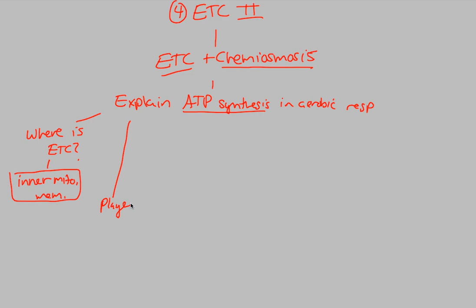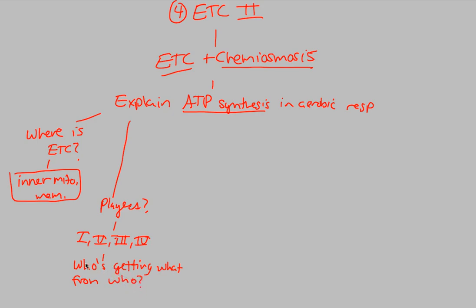Who are the major players of the electron transport chain? These are the complexes: Complex 1, 2, 3, and 4. You should also figure out who is accepting and who is transferring electrons, and who they're sending them to. Remember which complexes are involved in the proton pump: only Complexes 1, 3, and 4 are involved in creating a proton gradient. Complex 2 is not involved in creating a proton gradient and thus cannot be said to contribute to overall ATP synthesis — but it is important because that's where FADH2 gives up its electrons.